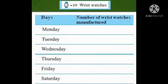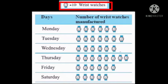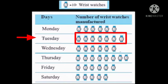Step two: write the days as per the data. Step three: start drawing the pictures as per the data in the table. For Monday, 60 watches are made. Each watch picture represents 10 watches, so six pictures have to be made. For Tuesday, 70 watches are made, so seven pictures have to be made.